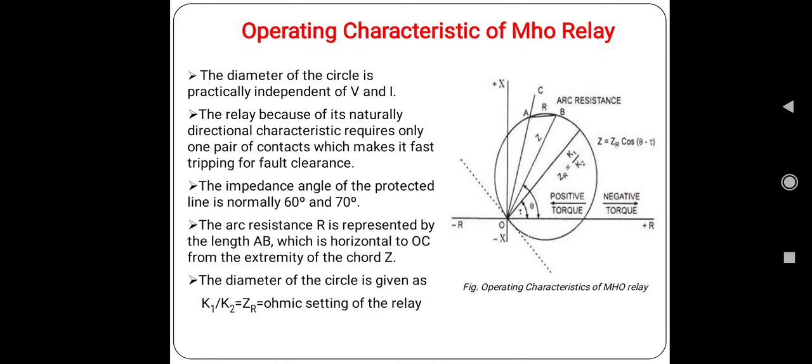So the diameter of the circle is given as K1/K2 equals ZR, that means impedance or ohmic setting of the relay. It represents the diameter of this circle.